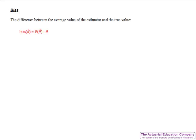First up let's look at the bias. The bias is the difference between the average value of the estimator and the true value of the parameter. So if we were estimating the parameter theta with an estimator theta hat, then the bias of theta hat is the expectation of the estimator take away the true value. If the bias is zero then we say the estimator is unbiased — that is, on average it gives the true value of the parameter.